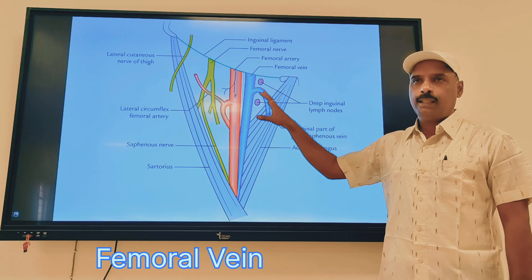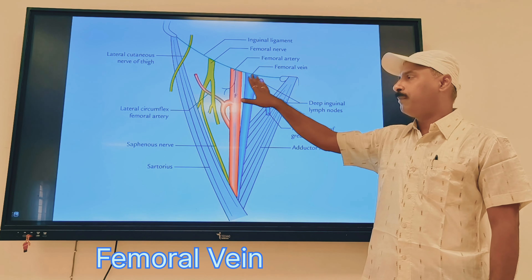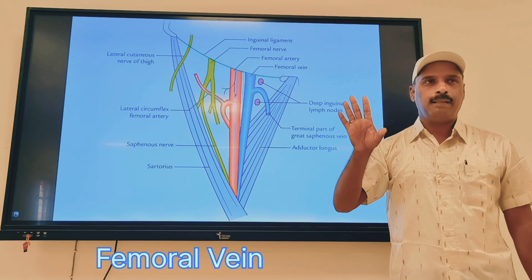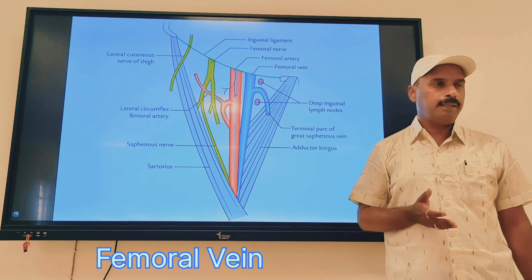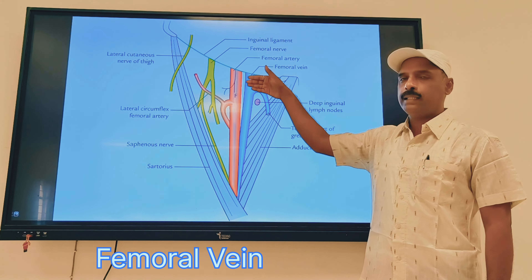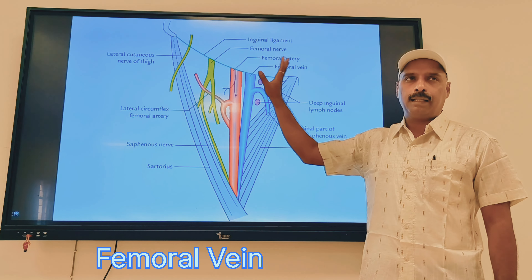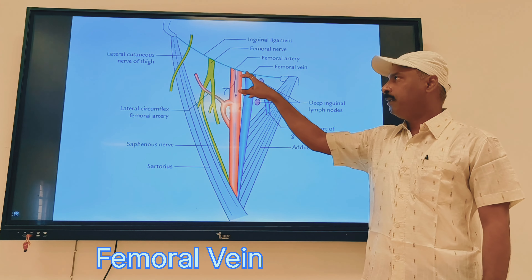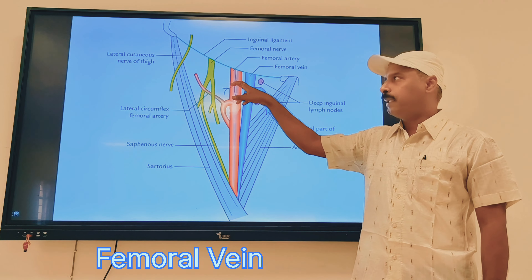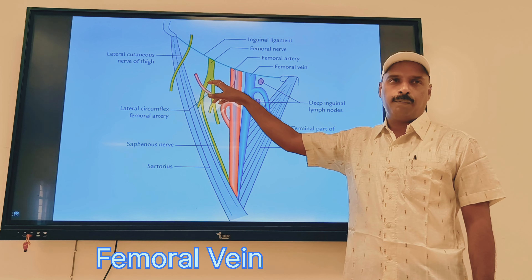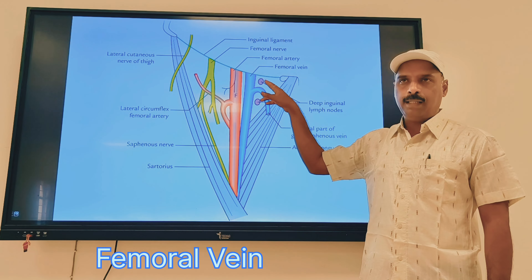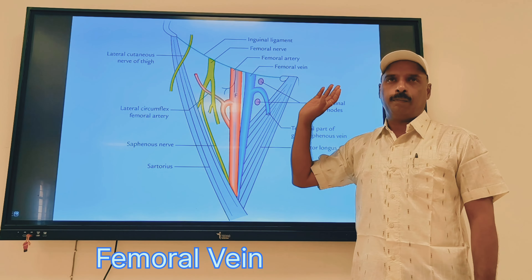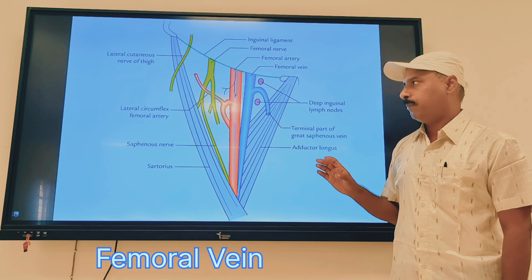In the femoral vein, you have to explain the relations the same as that of the femoral artery, because the two structures are near each other. You have to describe anterior, posterior, medial, and lateral relations. The femoral vein relates laterally to the femoral artery and nerve — that is what you have to remember.